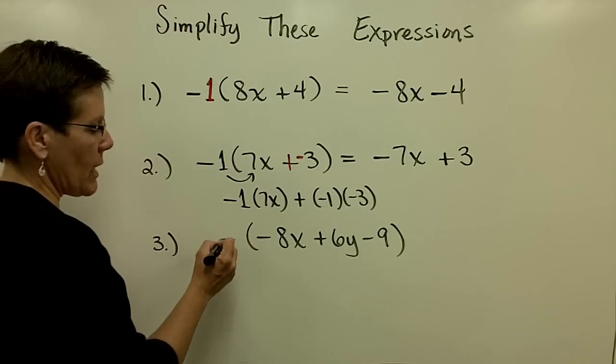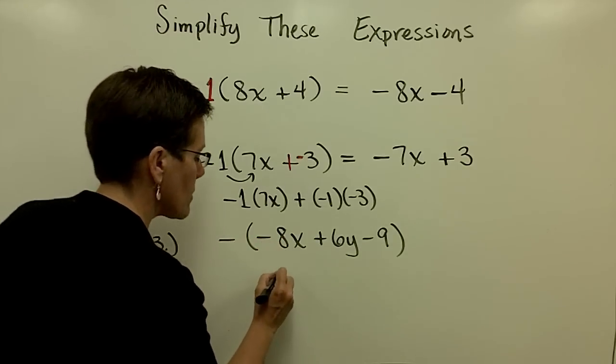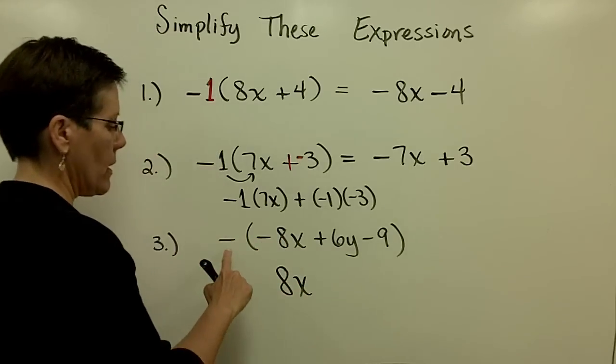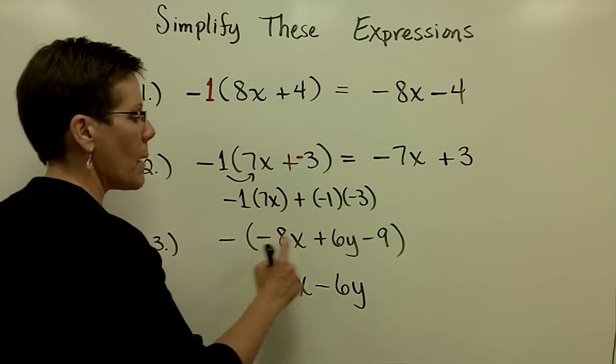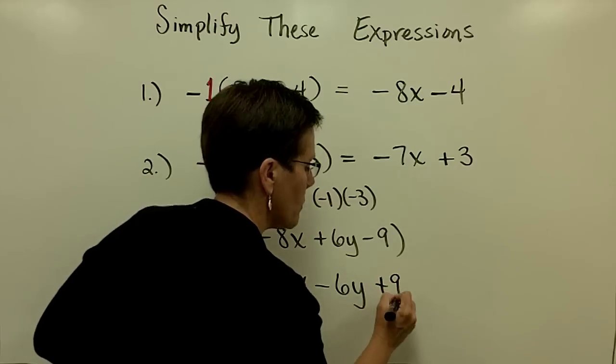It is so much easier to say give me the opposite of a negative 8x which is a positive 8x. The opposite of a positive 6y is a minus 6y and the opposite of a negative 9 is a positive 9.